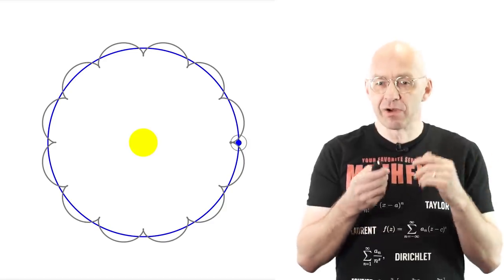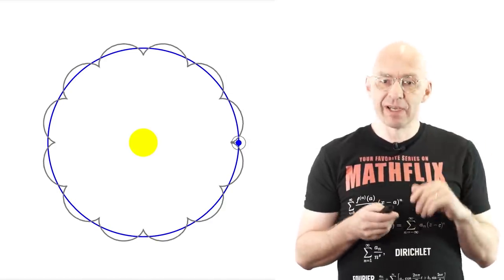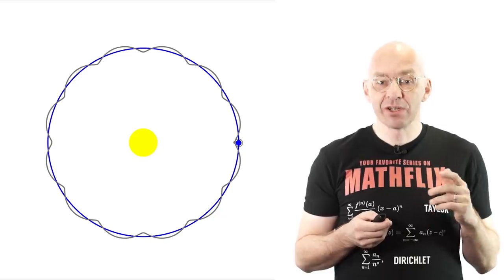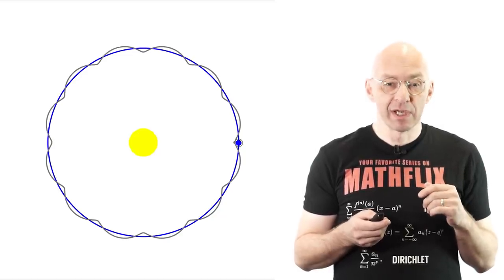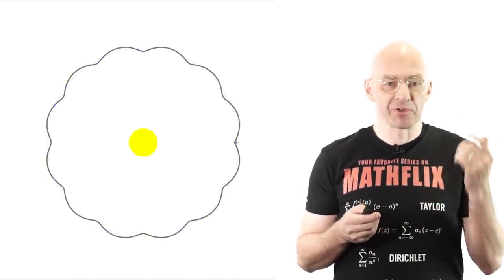So is that what our orbit looks like? Nope, we have to keep shrinking. As you can see, the orbit now has shallow waves but we're still not there. Let's keep on shrinking.